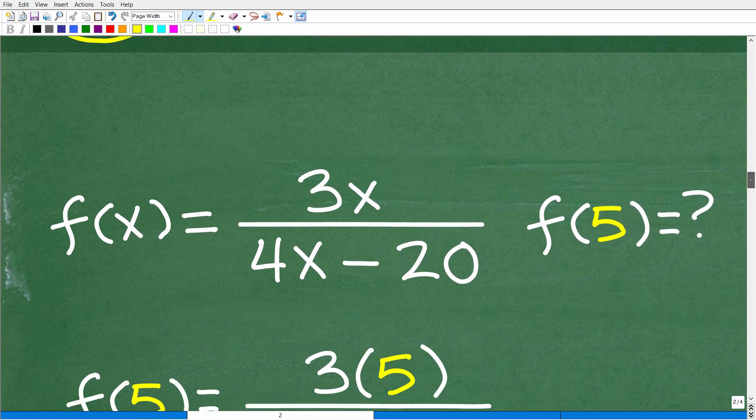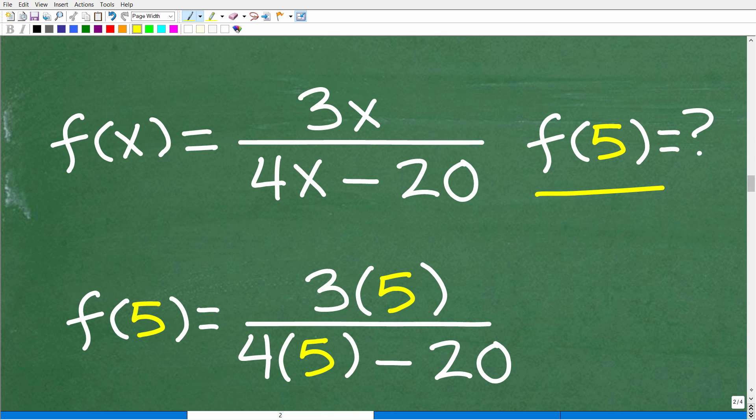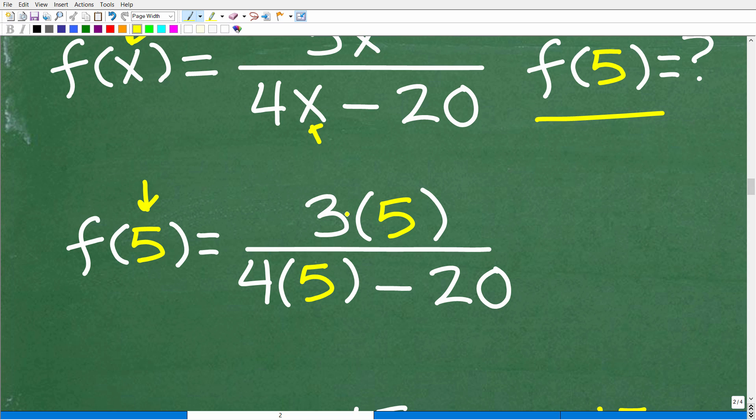Okay, so now let's go ahead and take a look at what happens when we try to evaluate this function for 5. All right, so f of 5, what is this equal to? Well, we're going to go ahead and try to evaluate the function for 5. So, f of 5 is going to be what? Well, we're going to replace these x's with 5, and then we're going to try to do the number crunching. So, this is going to be equal to 3 times 5 over 4 times 5 minus 20.